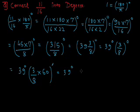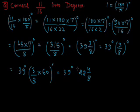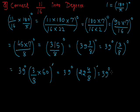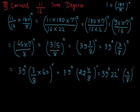After simplification, 3 by 8 into 60 becomes 180 by 8, which equals 22 and 4 by 8 minutes. So we get 22 complete minutes and 4 by 8 minutes remaining. We write it as 39 degrees 22 minutes and 4 by 8 minutes.